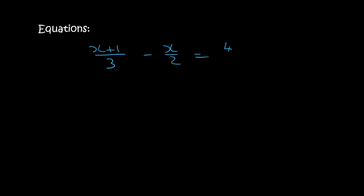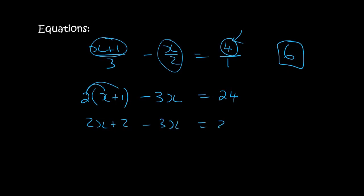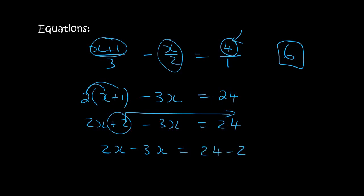Here's the last one with fractions, so you need a common denominator. Many students forget that a whole number is currently over 1. The common denominator for 3, 2, and 1 is 6. Multiply accordingly: the first term by 2 gives 2 times (x plus 1), the second by 3 gives minus 3x, and the third by 6 gives 24. Ignoring the denominators: 2x plus 2 minus 3x equals 24. Moving the 2 over: 2x minus 3x equals 24 minus 2. That gives minus x equals 22. Dividing both sides by minus 1, x equals minus 22.